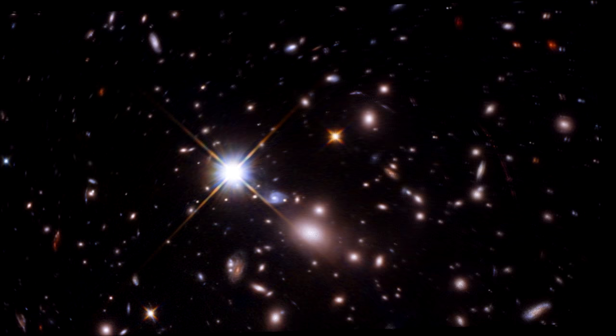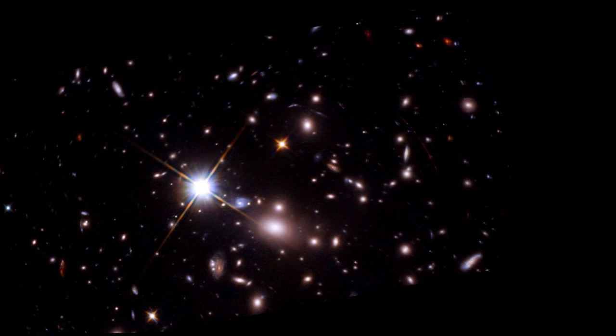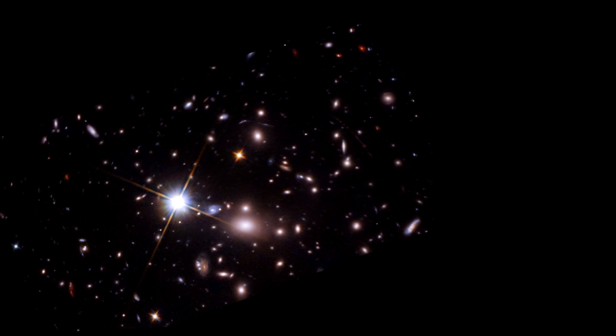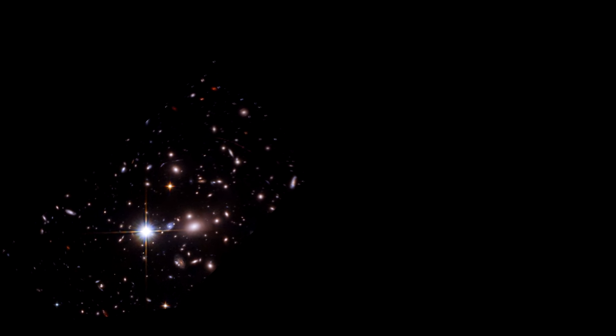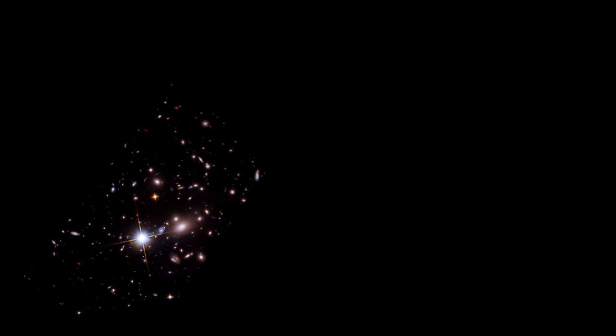From general relativity, we know that matter curves space, and light travels the shortest distance through this curved space, called geodesics. Large masses, such as a galaxy cluster, bend light passing through it, just like a lens.